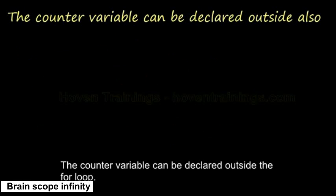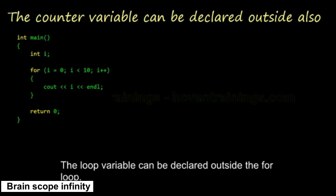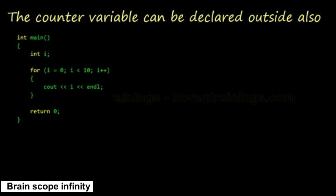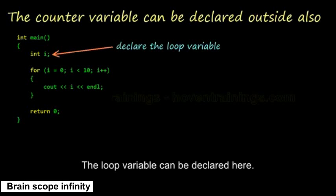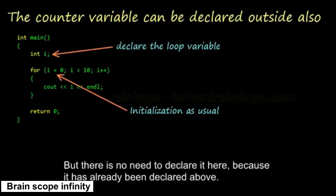The counter variable can be declared outside the for loop. The initialization can be done as usual, but there is no need to declare it here because it has already been declared above.